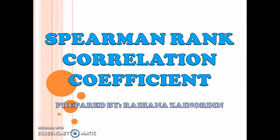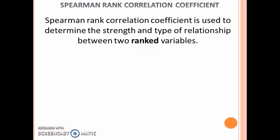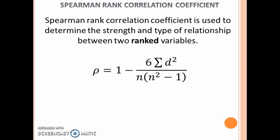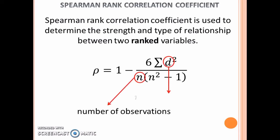Spearman Rank Correlation Coefficient is used to determine the strength and type of relationship between two rank variables. It is denoted by rho and is given by this formula, where n is the number of observations and d is equal to rank x minus rank y.